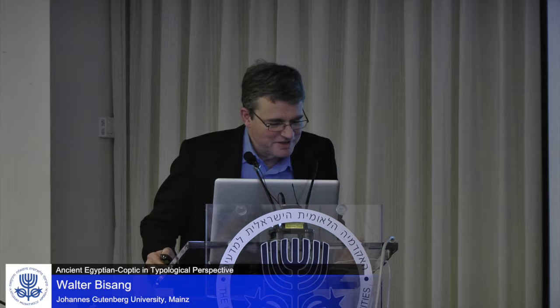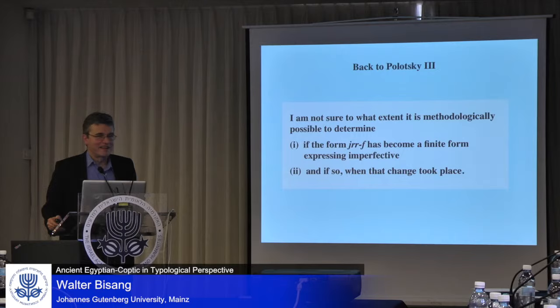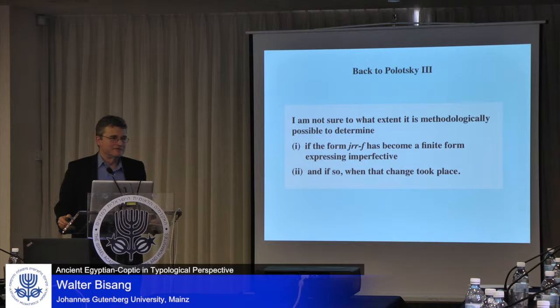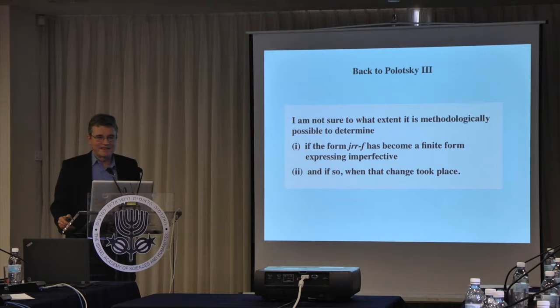I would like to conclude here. I'm not sure to what extent it is methodologically possible to determine, first, if the form JRRF has become a finite form expressing imperfective, and if so, when that change took place, because texts have their own inertia as far as written traditions go — orthography, but not only orthography, also morphological forms and so on are transmitted. I've tried to give you examples from various languages that might be interesting from the perspective of what is going on in Egyptology and in Coptic studies for further discussion. Thank you very much.